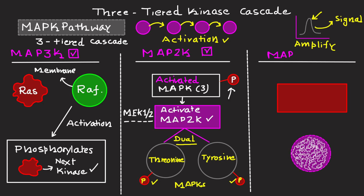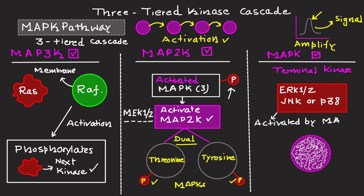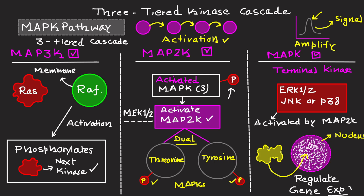The third level is MAPK, which stands for MAP Kinase. The terminal kinases in the cascade — ERK1/2, JNK, or P38 — are activated by MAP2K. These MAP kinases then translocate to the nucleus, where they act as regulatory proteins to regulate target gene expression as well as cytoplasmic substrates. Overall, this is an interesting pathway where molecules are recruited and further kinases are sequentially activated.